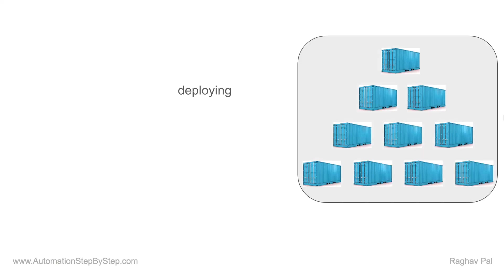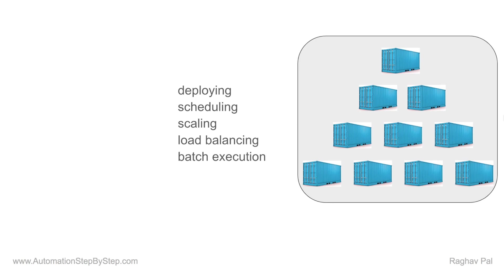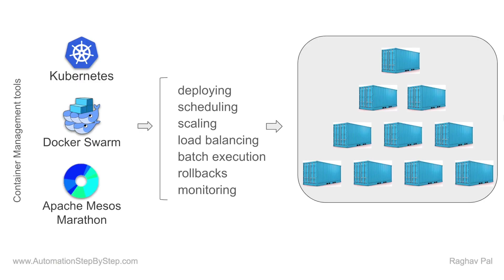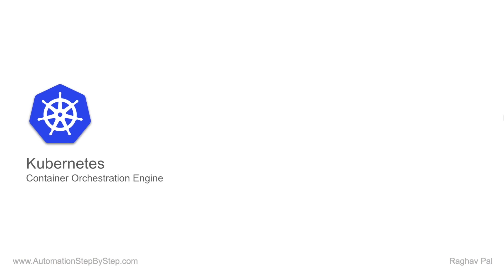In a scenario with so many containers, we have to manage deploying applications on multiple containers and servers, scheduling deployments, scaling up and down based on user needs, load balancing across all servers, batch execution, rollbacks, and monitoring of all these containers. Doing this manually would be very difficult and inefficient. We need an automated tool — a container management or orchestration engine — and out of all the options, Kubernetes is the most popular and widely used, with others like Docker Swarm and Apache Mesos Marathon also available.